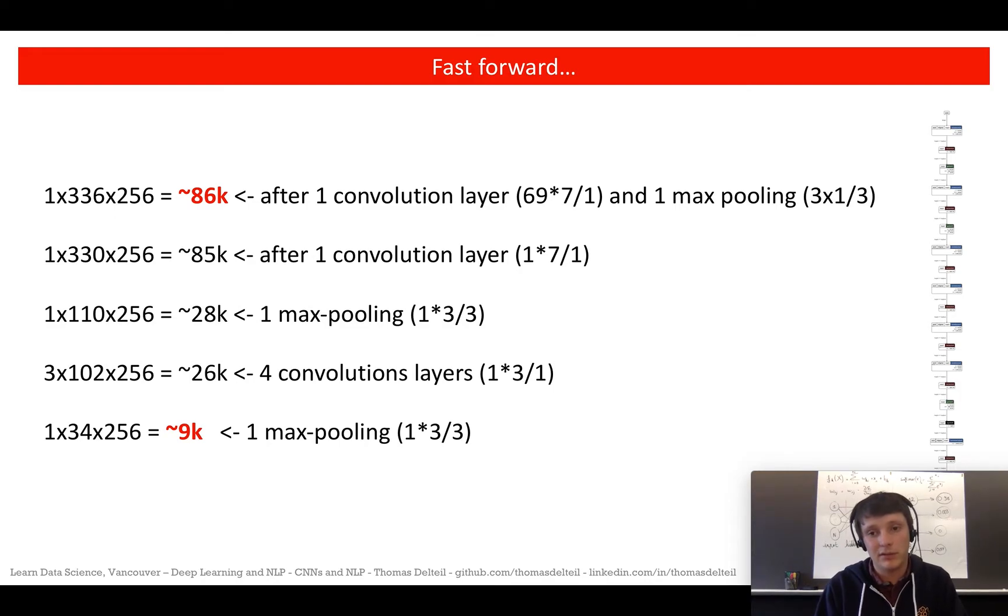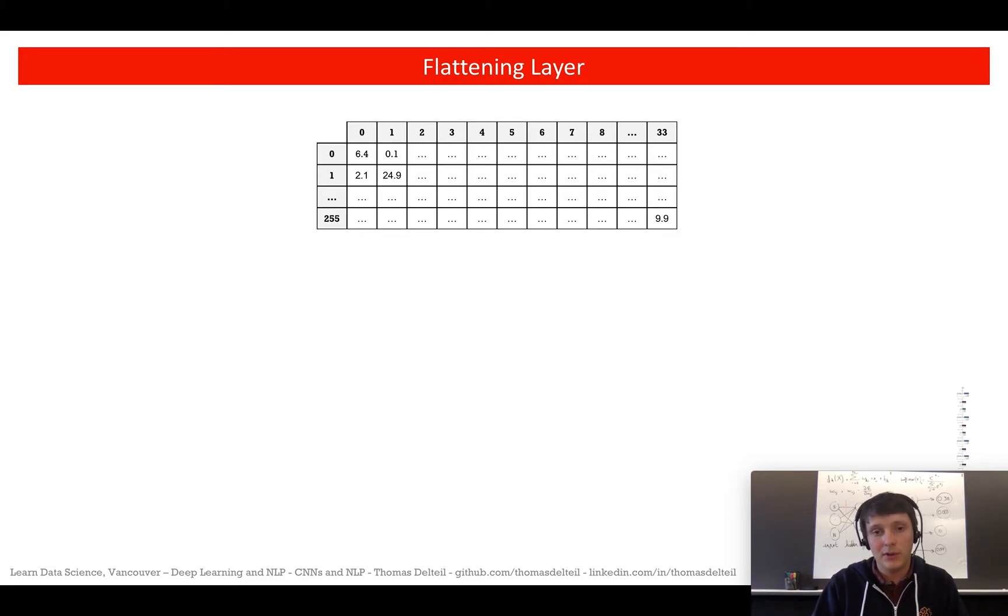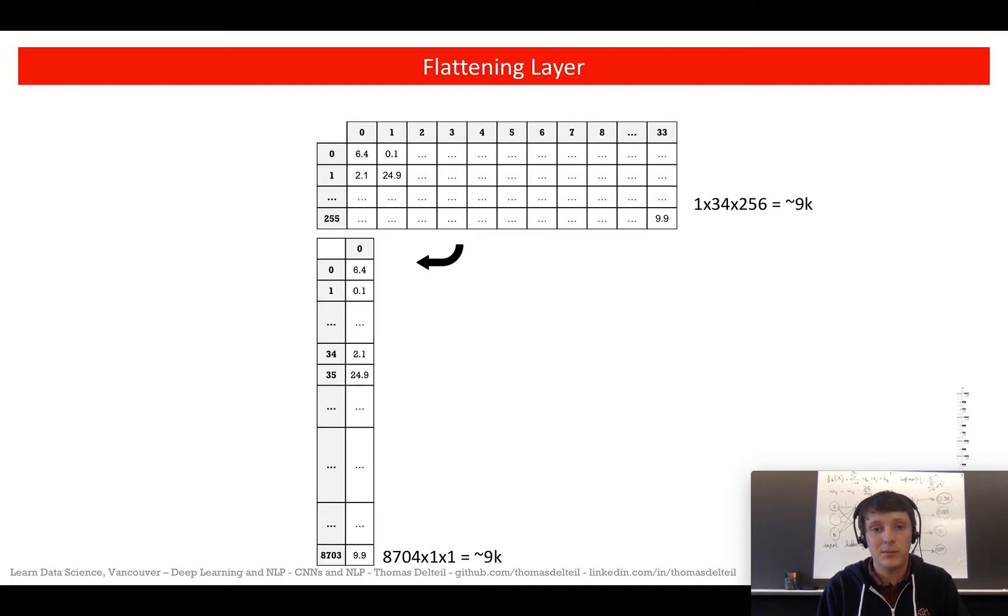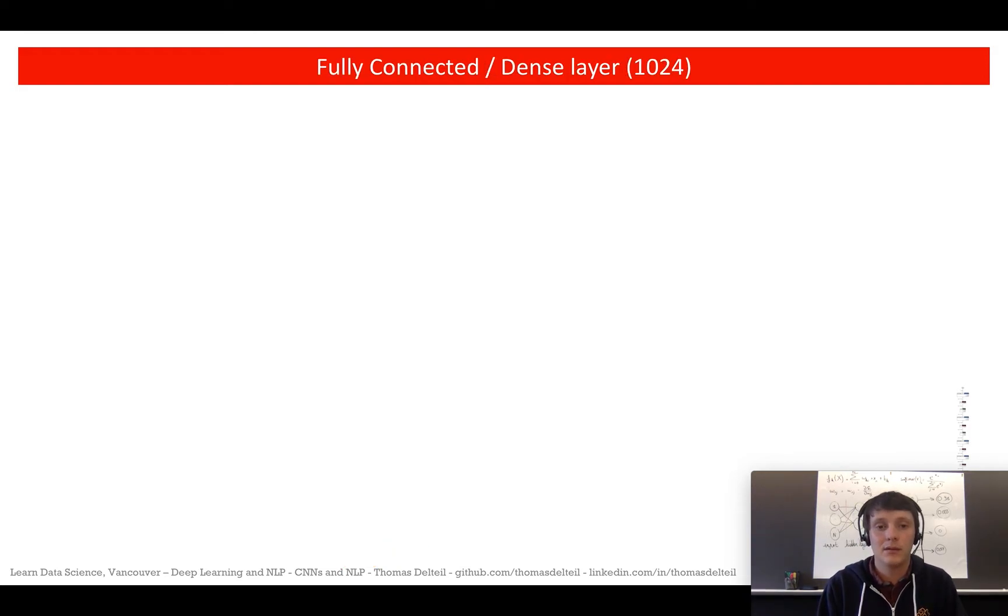That was the max pooling operation. I'm not going to go into details into every layer. After this max pooling we actually have four convolutional layers one after each other without max pooling inside. They have a kernel of one by three. Then we have a final max pooling layer which brings down the number of elements to about 9000. We have our feature maps which are one by 34. What we want is to add all that into one big vector. So we're going to have a flattening operation which is pretty simple. It takes each feature map and then puts it one after each other. We don't change the number of dimensions, we simply append every feature map after each other.